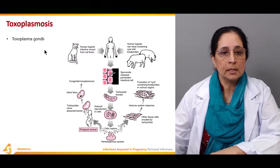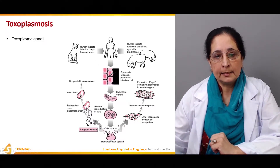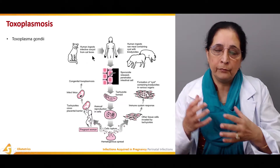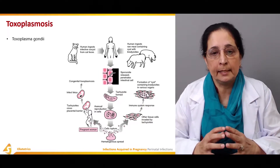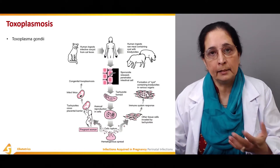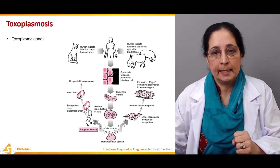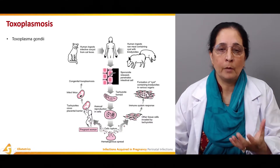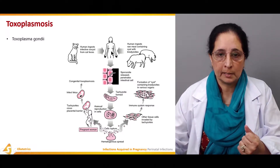The organism that causes Toxoplasmosis is Toxoplasma gondii. This is usually caused when humans ingest infective oocysts from cat feces — through contaminated food or hands. The other factor that can cause Toxoplasmosis is if the human ingests raw meat containing cysts with bradyzoites, which can also cause Toxoplasmosis.